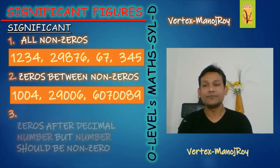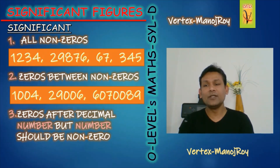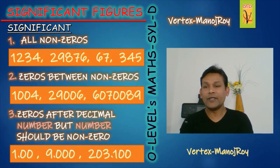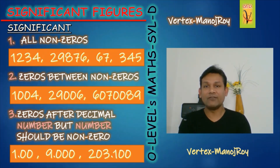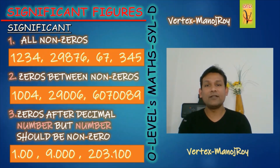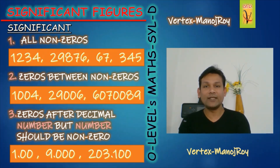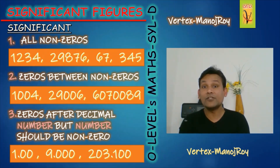Then we have a very important rule: zeros after the decimal point are significant when the number before the decimal is non-zero. For example, 1.00 has three significant figures. 9.000 has four significant figures. 2.03000 has six significant figures. Students often ask: is 1.00 one significant figure or three? Remember, when the number before the decimal is non-zero — not zero-point-something — all digits including trailing zeros are significant.